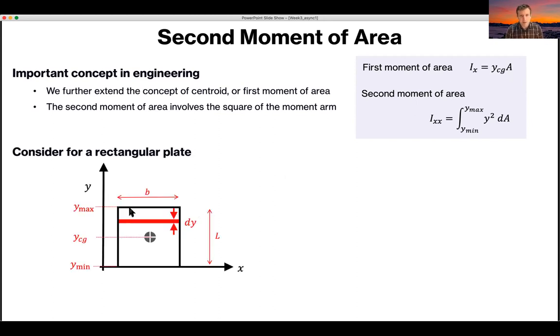So computing this now for the second moment of area, which has the notation usually Ixx. We use the same idea that we break this area into the product of its width and its incremental height. And we apply this idea and we integrate between y is equal to 0 and y is equal to L of y squared.